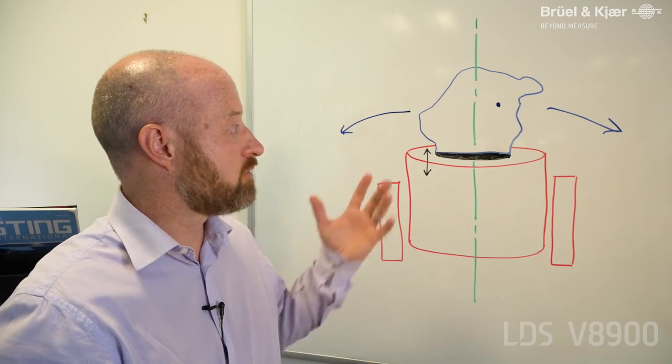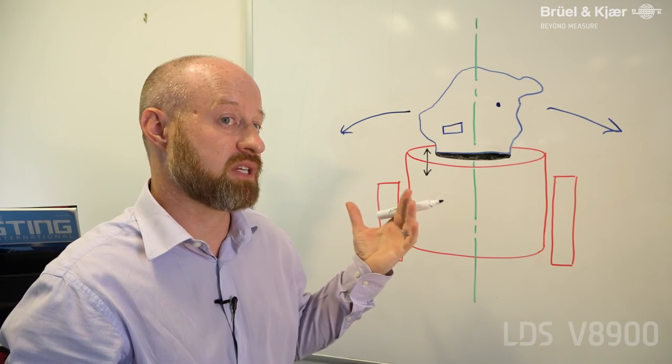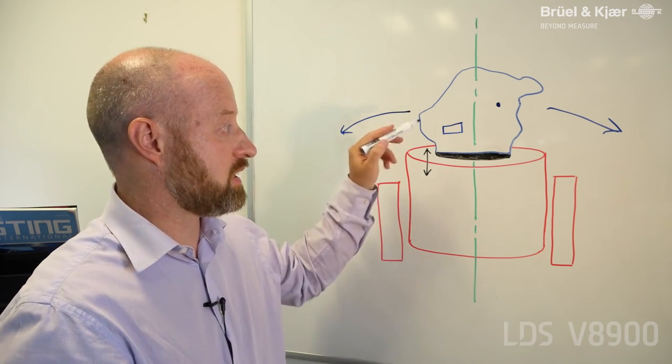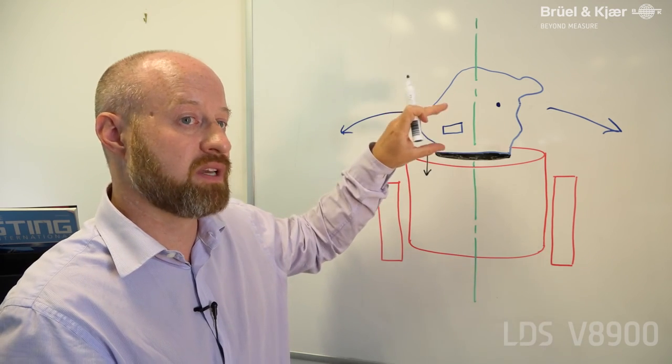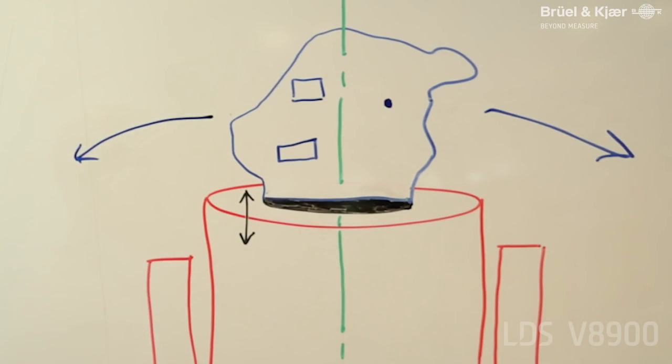For example, if a small item is required to be tested, historically that could have been tested just on the shaker. But a better test result will be achieved by testing it as part of a larger assembly where it will be located. Hence, a number of smaller items can be included in one large payload.